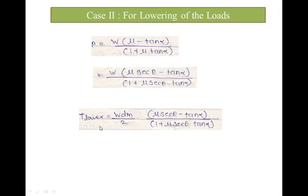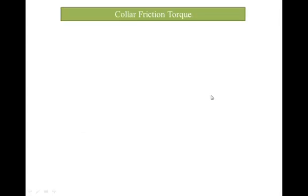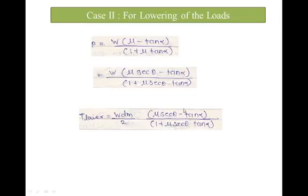You will get the equation for torque required to lower the load. This torque required is greater compared to the square thread, which is W·dm/2·tan(φ − α). So to summarize: simply replace μ by μ·secθ and use the formulation of the square thread as it is.